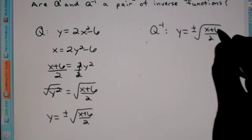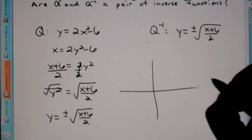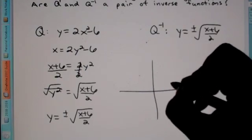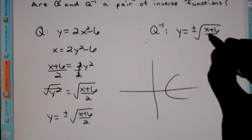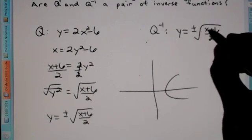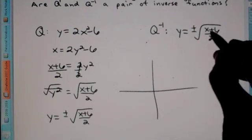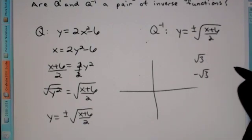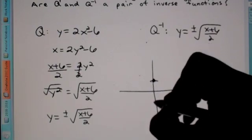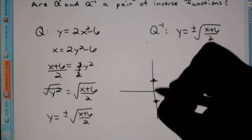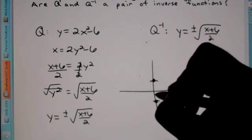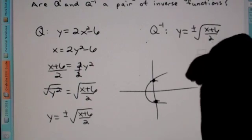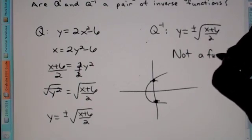If you were to graph this, this actually ends up as a sideways parabola. You can tell because if you plug in 0 for x, you get the square root of 6 over 2, which is positive root 3 and negative root 3 for your y value. So when x is 0, you have both positive root 3 and negative root 3 — two points lining up one above the other. That means this is not a function.